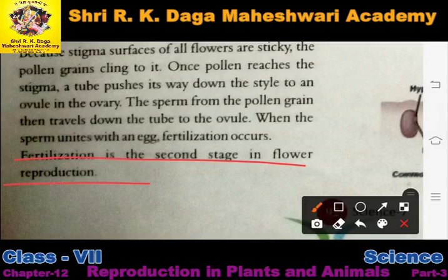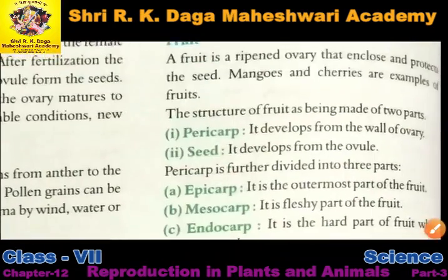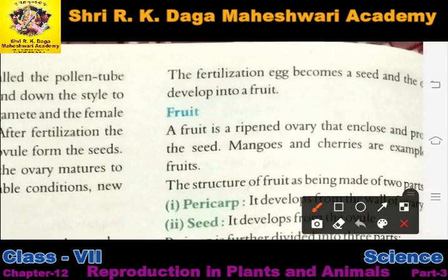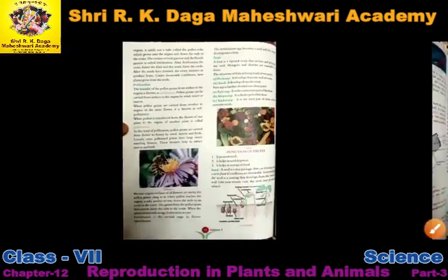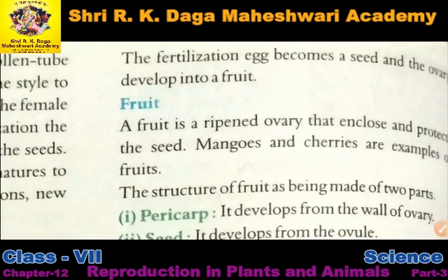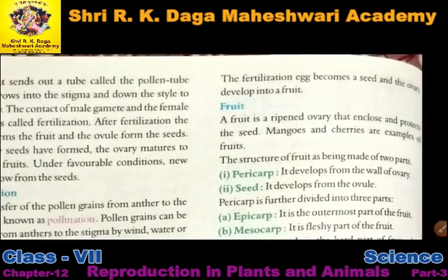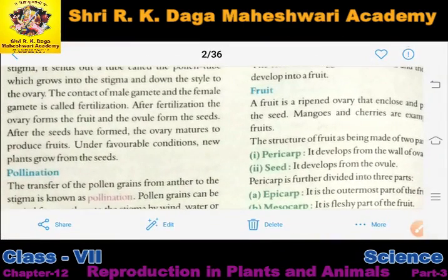Fertilization is the second stage in flower reproduction. The fertilized egg becomes a seed, and the ovary develops into a fruit. Jo fertilization egg hai woh ek seed mein convert ho jata hai, aur jo ovary hai woh develop hokar ek fruit ban jati hai.